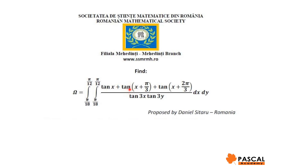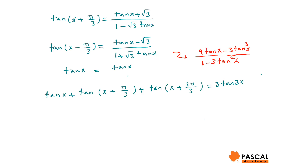If we expand tan(x + pi/3) and tan(x + 2pi/3), we get tan(x) + sqrt(3) over 1 minus sqrt(3)tan(x), and tan(x) minus sqrt(3) over 1 plus sqrt(3)tan(x). Adding these with tan(x), we get tan(x) + tan(x + pi/3) + tan(x + 2pi/3) equals (9tan(x) minus 3tan³(x)) divided by (1 minus 3tan²(x)), which equals 3 times tan(3x).